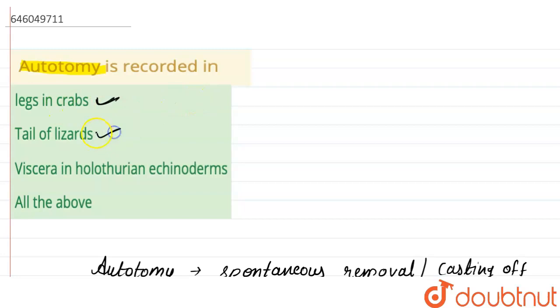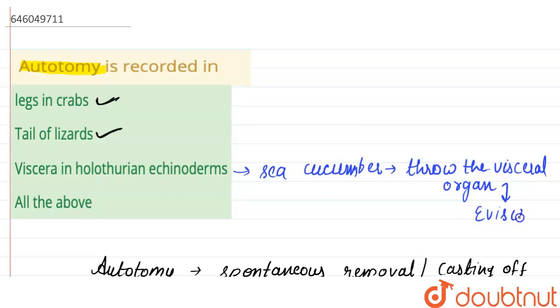Third option: viscera in holothurian echinoderms. The holothurian echinoderms are commonly known as sea cucumber. These sea cucumbers eject their visceral organs through a process known as evisceration. Therefore, autotomy is also recorded in viscera of holothurian echinoderms.